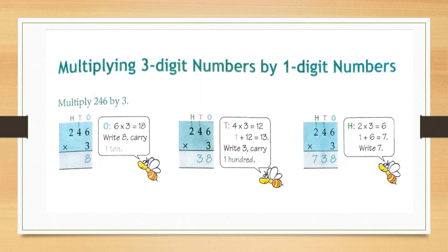Now multiply the tens digit by three — that is four into three is twelve. Add one carry, so twelve plus one is thirteen. Write three under tens and carry one hundred. Now multiply the hundreds by three — that is two into three is six. Add one carry, so six plus one is seven. Write seven under hundreds. So your answer will be seven hundred and thirty eight.